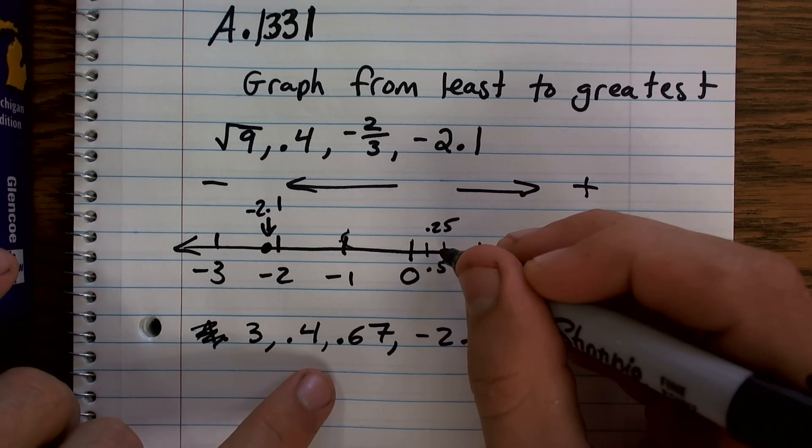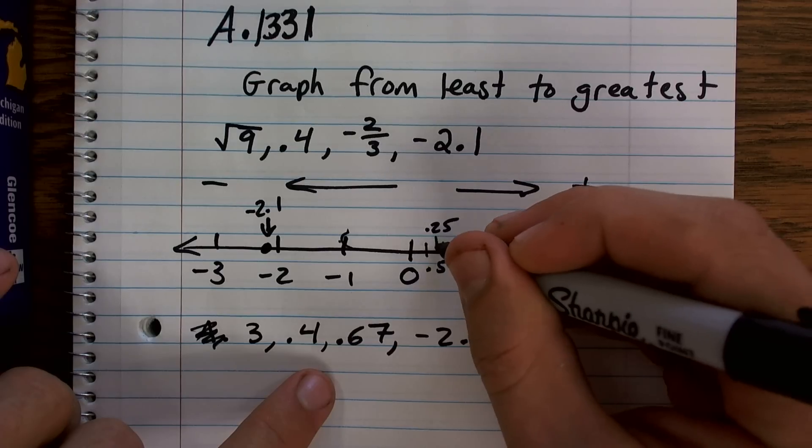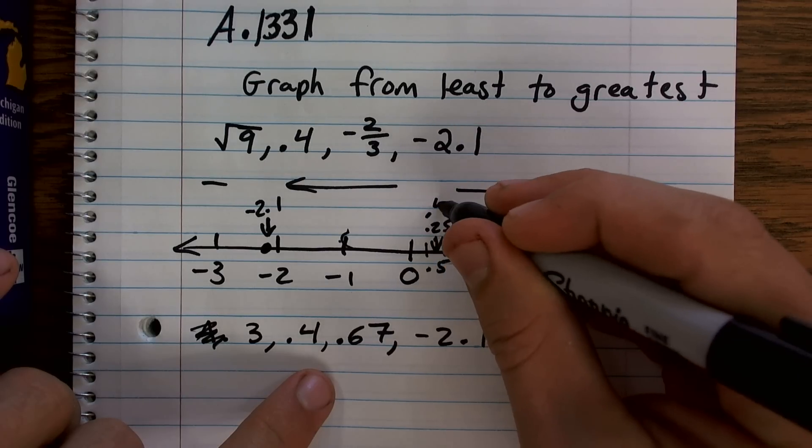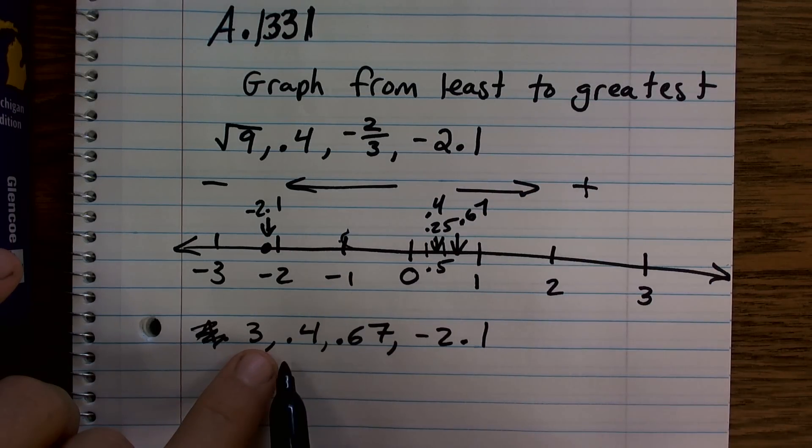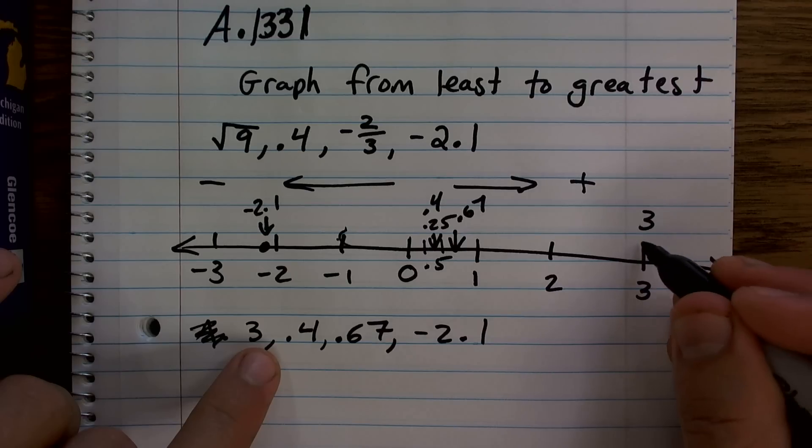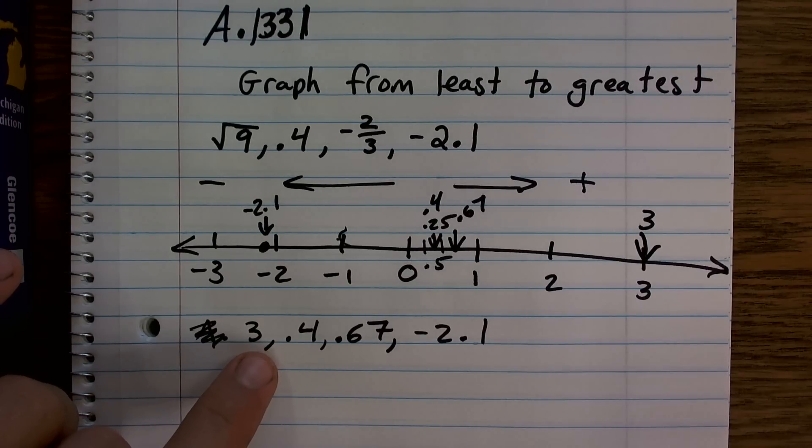0.4 is on the other side of 0.5. So I have here would be 0.4, here would be 0.67, and then 3 is going to be all over here, right there on the whole integer.